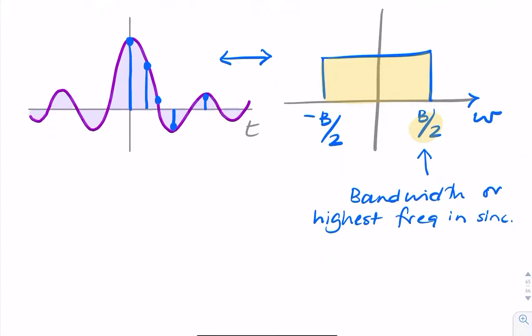Therefore, to find the Nyquist rate, or what I should call it actually isn't F but omega, the Nyquist rate is 2 times B over 2, which is B.